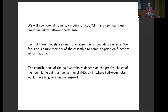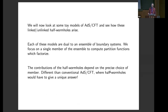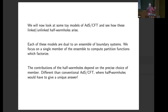Now what we're going to do is look at some toy models of AdS/CFT and see how these linked and unlinked half wormholes arise. Each of the models we're going to be studying is dual to an ensemble of boundary systems. What we're going to do is focus on a single member of this boundary ensemble to compute partition functions which factorize. In this case, the contributions of the half wormholes will depend on the precise choice of member of the ensemble — this is very importantly different than conventional AdS/CFT, where the half wormholes would have to give a unique answer for the single boundary theory.